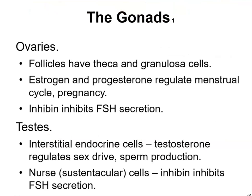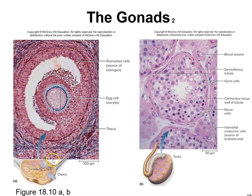The gonads — ovaries and testes — will be covered in more detail during the reproductive system unit. The ovaries contain follicles with theca and granulosa cells that produce estrogen and progesterone to regulate the menstrual cycle and pregnancy, and inhibit follicle-stimulating hormone secretion. In the testes, interstitial endocrine cells produce testosterone to regulate sex drive and sperm production, while sustentacular cells also inhibit follicle-stimulating hormone secretion.